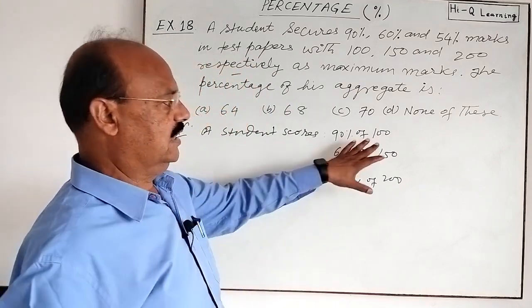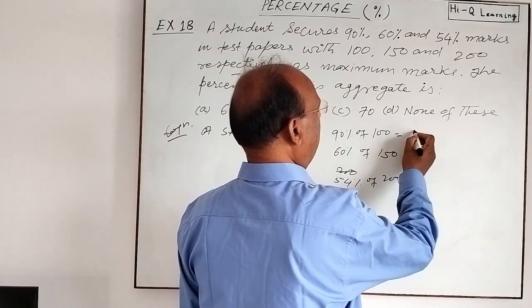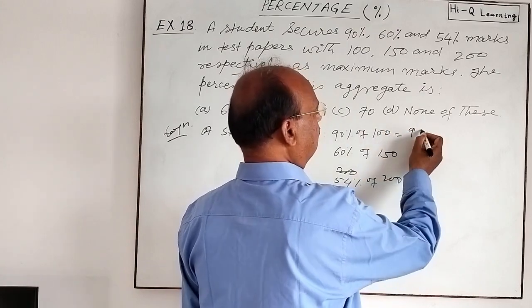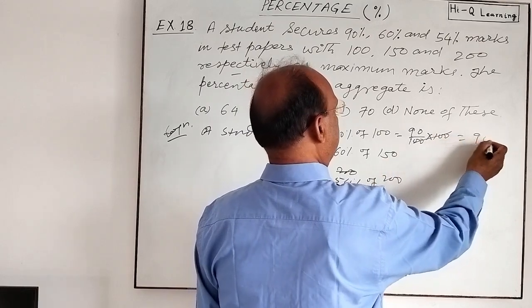So let us calculate it. Very simple. 90% of 100 means simply 90, because this is 90 by 100 into 100. So this is equal to 90.